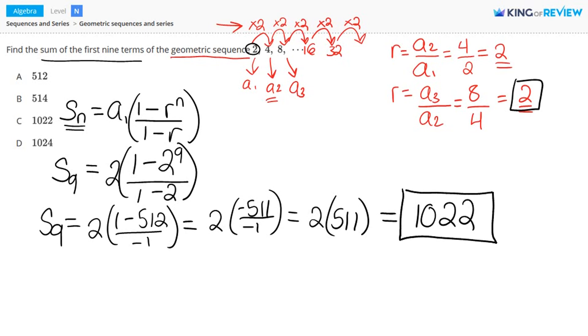So this represents the sum of the first 9 terms. So a1 plus a2 plus a3, and this continues until you get to the 9th term, a9. And if you add these all up, you get 1022. So letter C is correct. Thanks for watching.